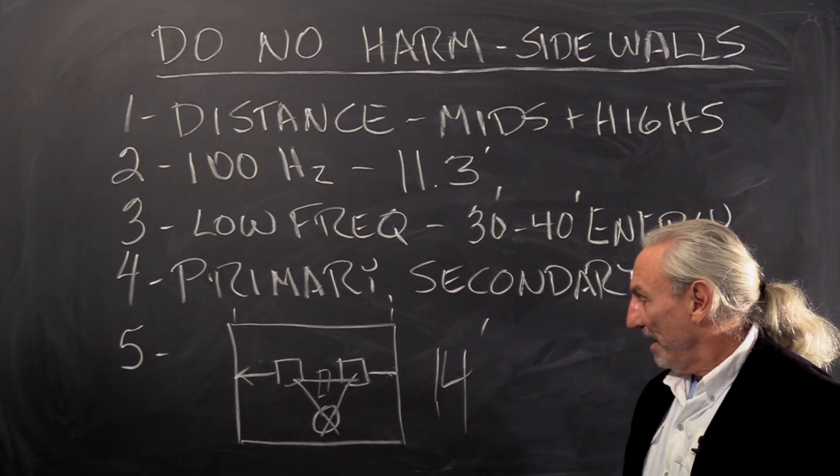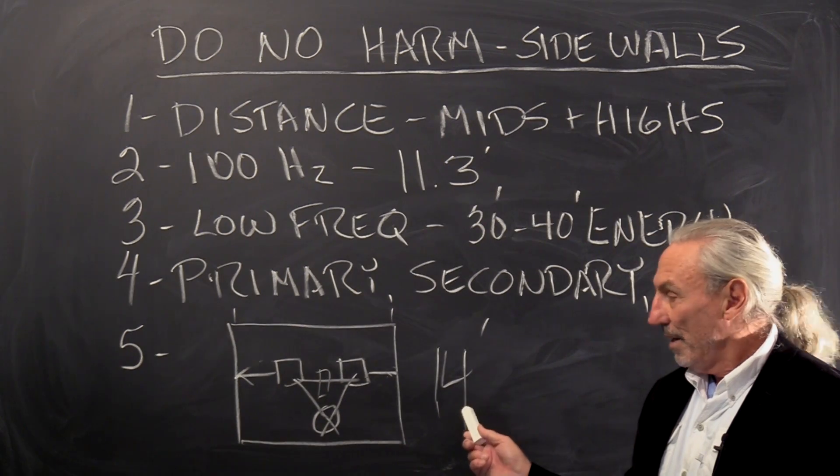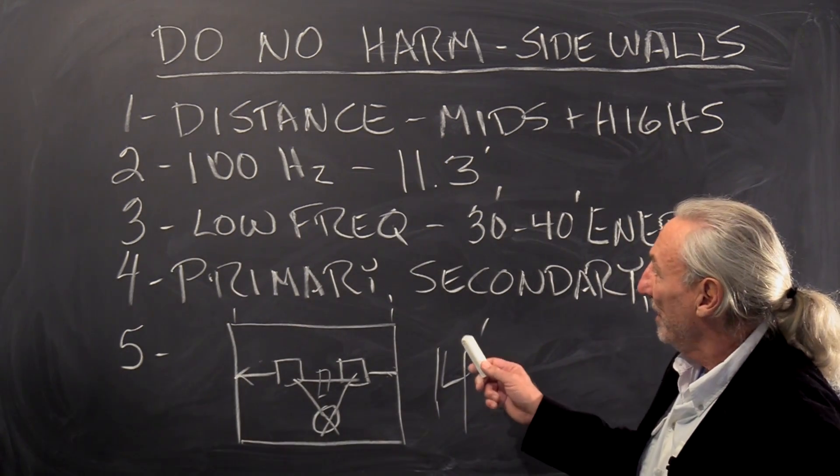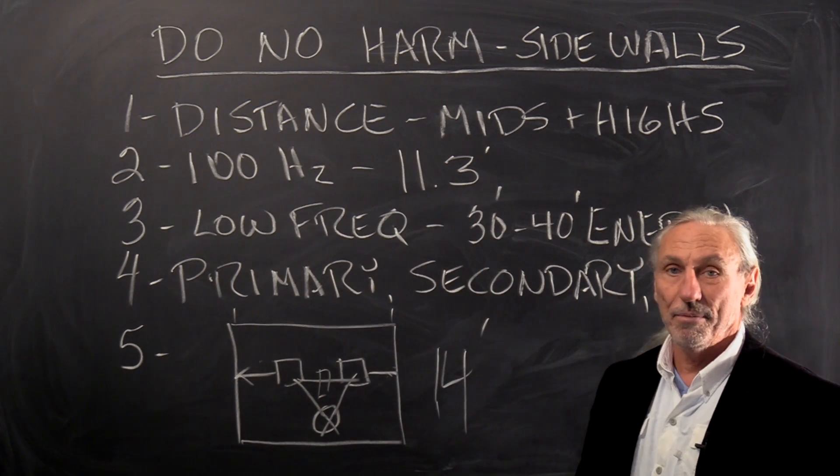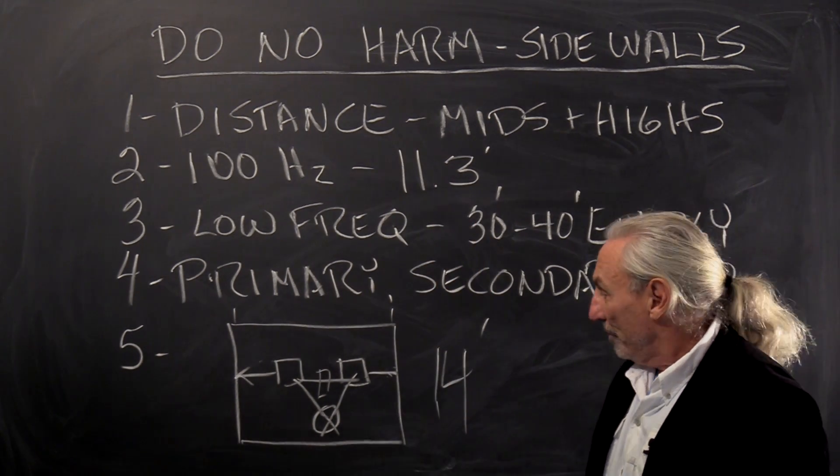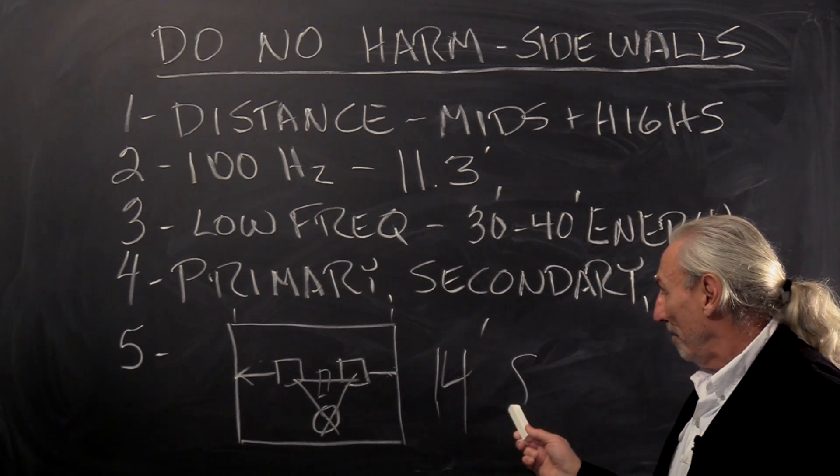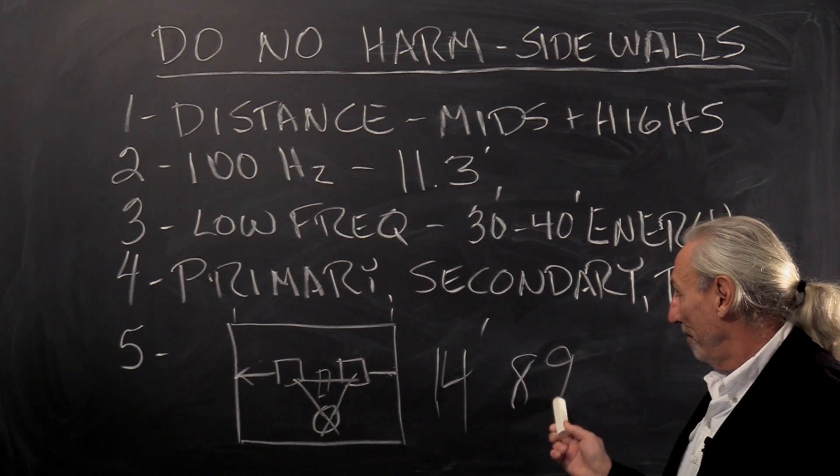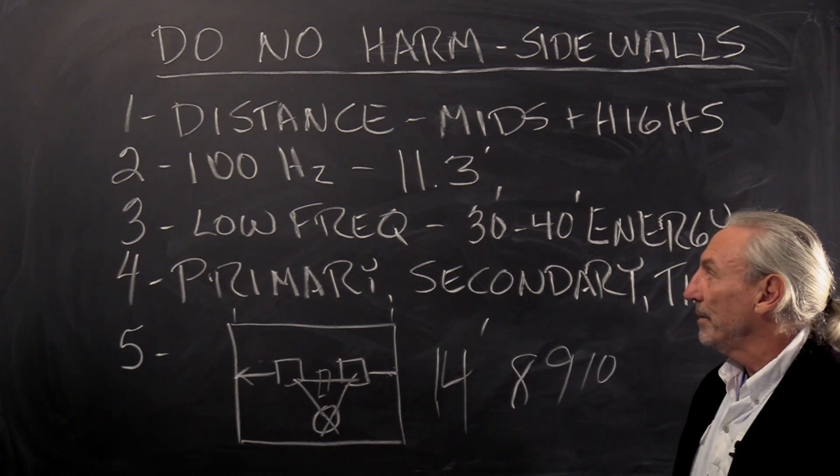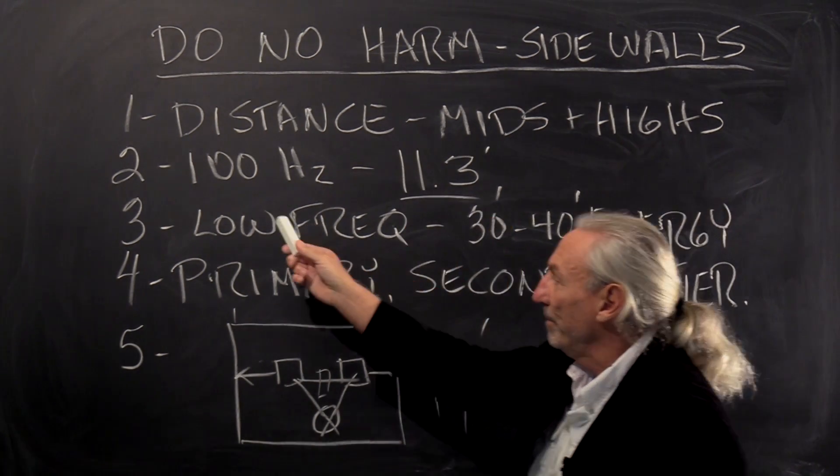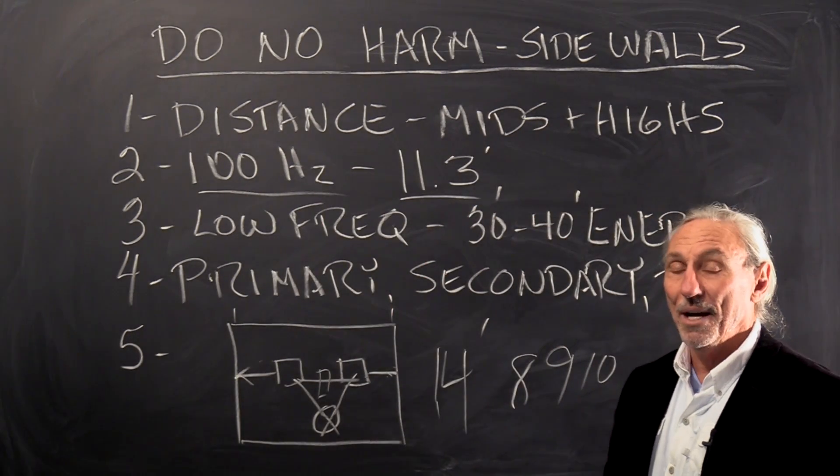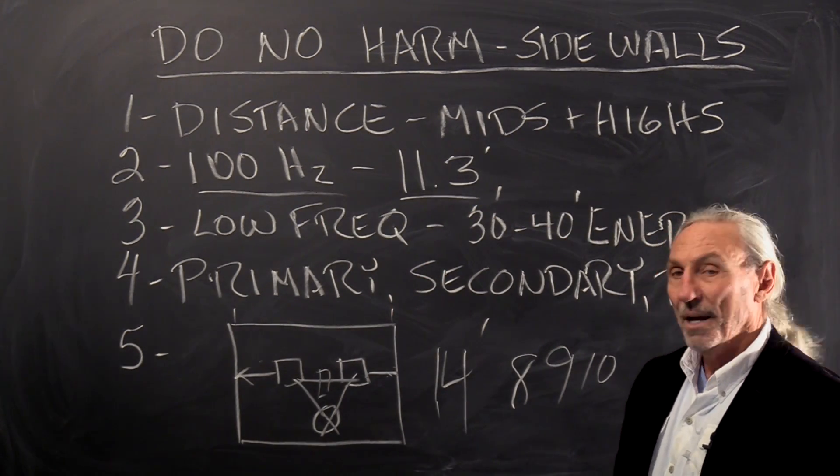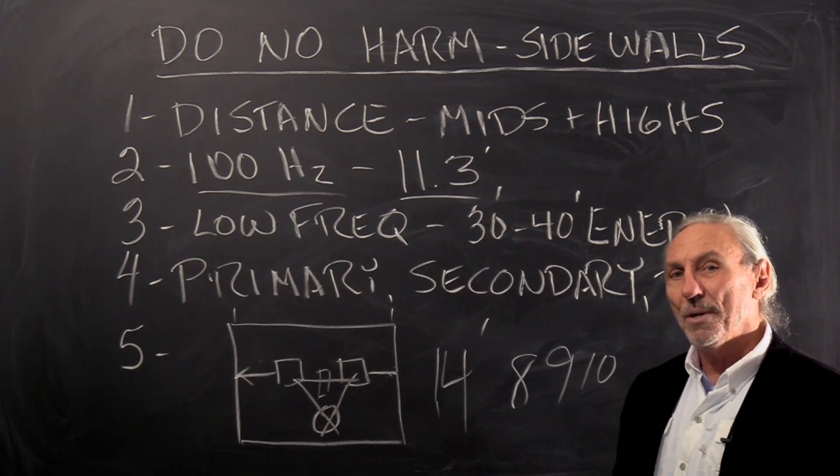You have to remember the 100 cycle energy is 11.3 feet long. So you guys that have these eight foot, nine foot, ten foot wide rooms, you're going to have problems from 100 cycles and up, maybe 90 cycles and up. That's tough because the treatment you have to use to manage those is thick.